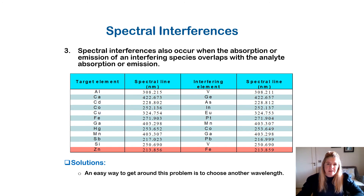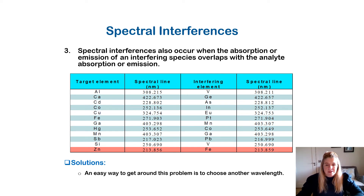Spectral interferences can also occur when the absorption or emission of an interfering species overlaps with the analyte absorption or emission. You need to know which metals absorb at the same wavelengths — for example, aluminium is at 308 nanometres and vanadium is also at 308 nanometres. If both are in the same sample, you should avoid analyzing them together. The same applies to cadmium and arsenic, which are often found in environmental samples in trace amounts. An easy solution is to choose a different wavelength to measure those metals at.